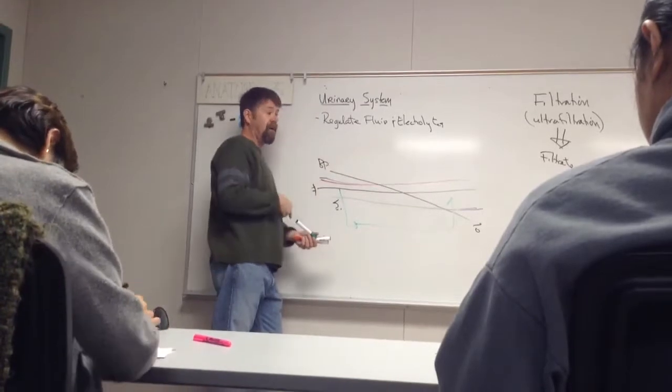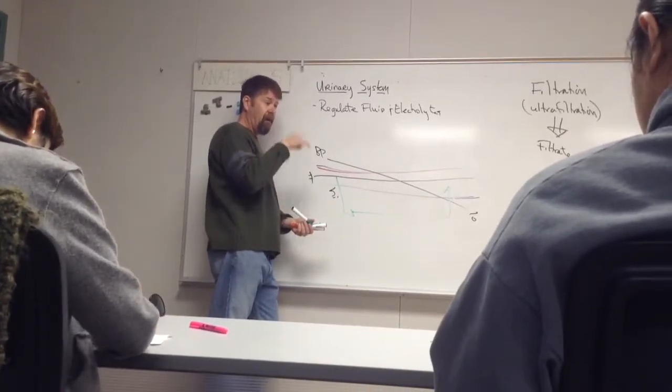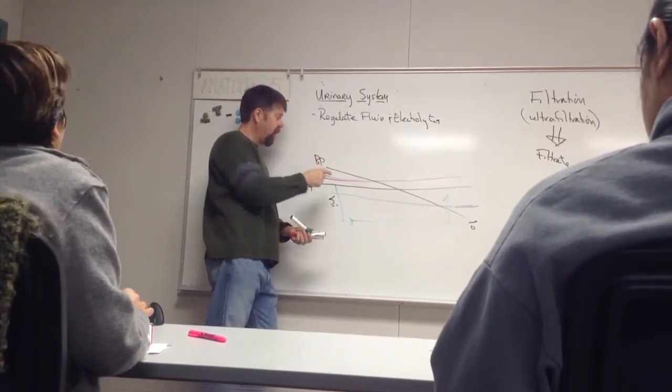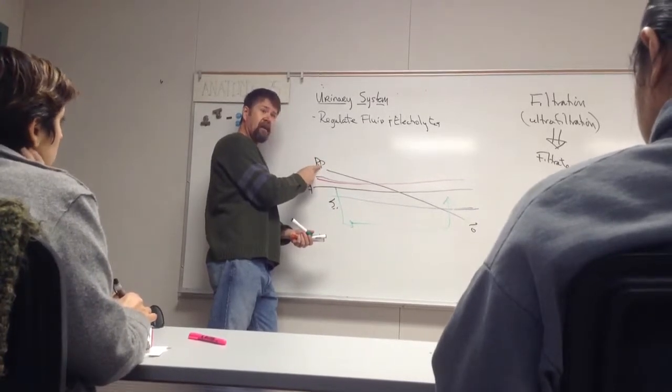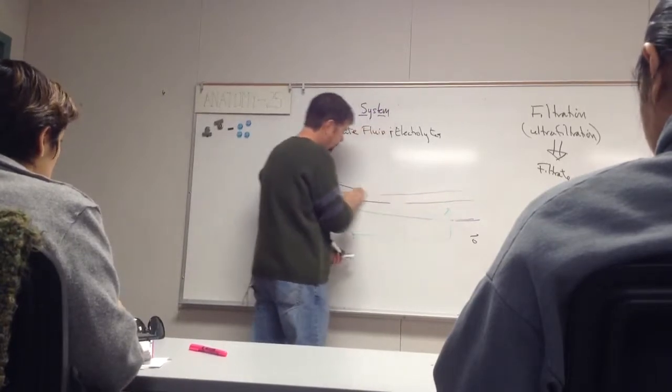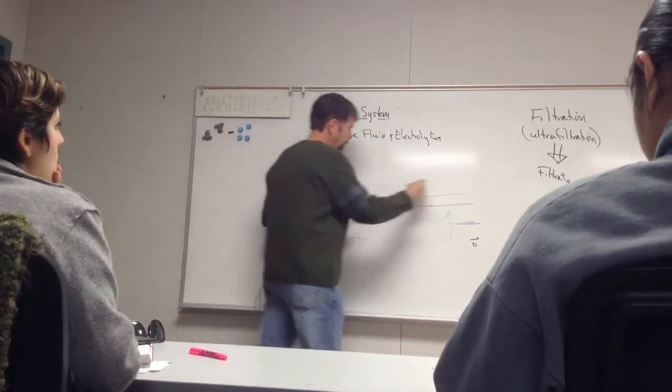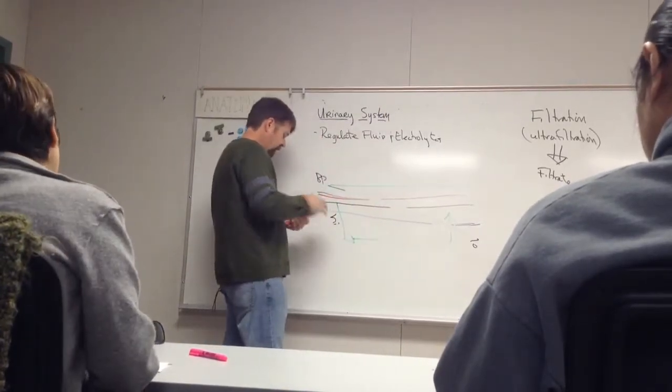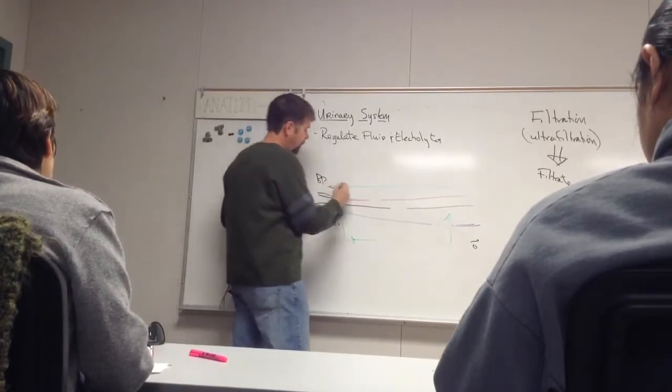But here we don't go artery, capillary, vein. Here we go artery, capillary, artery. So this number, guess what doesn't change? This number stays constant too. So in essence, this number is going to stay constant like this.